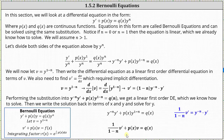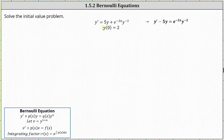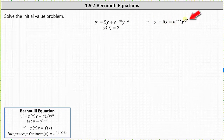Let's go through this process again with an actual example. Let's solve the initial value problem y prime equals 5y times e to the power of negative 2x times y to the power of negative 2, with initial condition y of zero equals 2. Let's first write the differential equation in the correct form by subtracting 5y on both sides. Notice in this form we can identify that n is equal to negative 2.